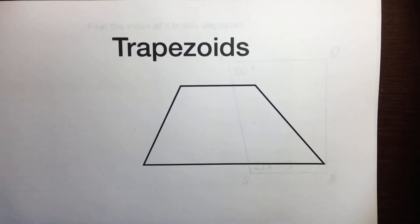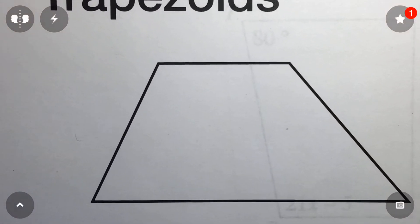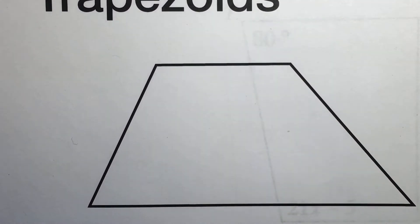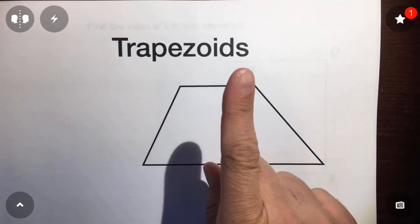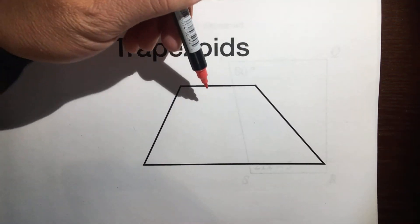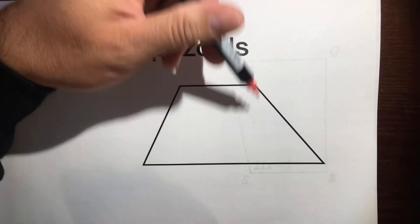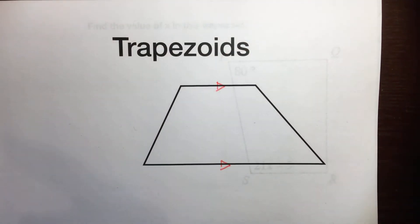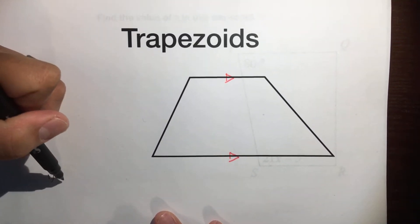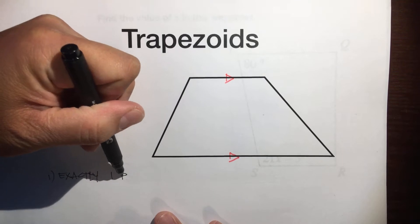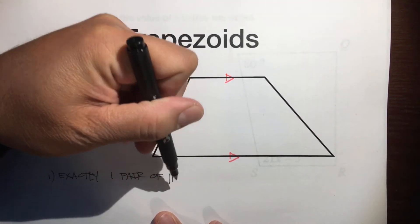So, what makes a trapezoid a trapezoid? If you look at it closely, the main fact about trapezoids is that it has exactly one pair of parallel lines. This line is definitely not parallel to this line because they're going in opposite directions — they're going to meet at some point. But these two will never meet. So let's put one arrow here and one arrow here. Fact number one about trapezoids: exactly one pair of parallel sides.